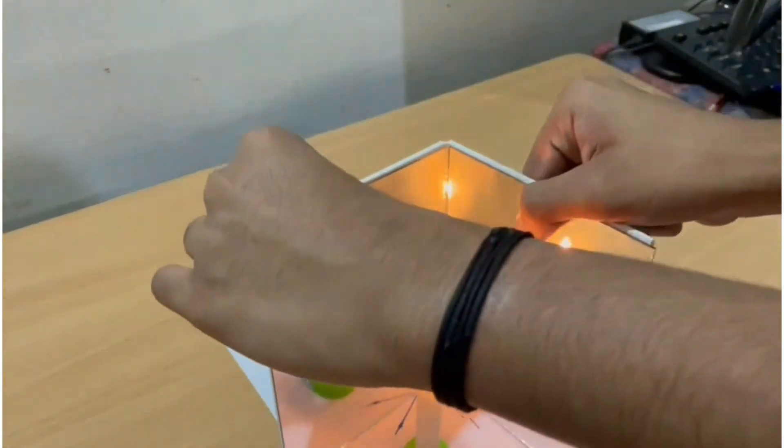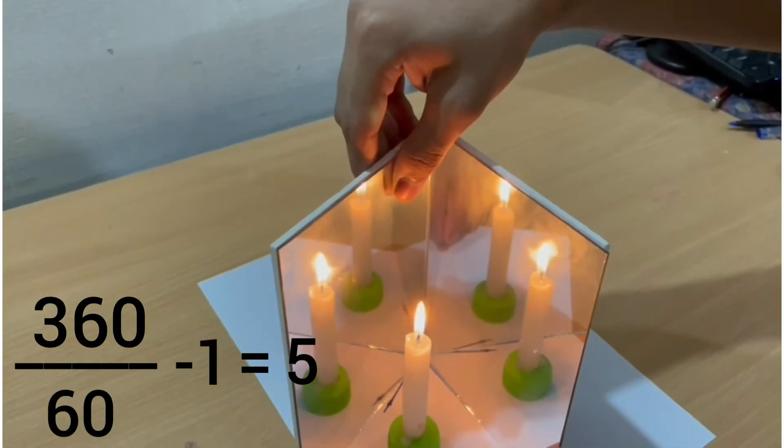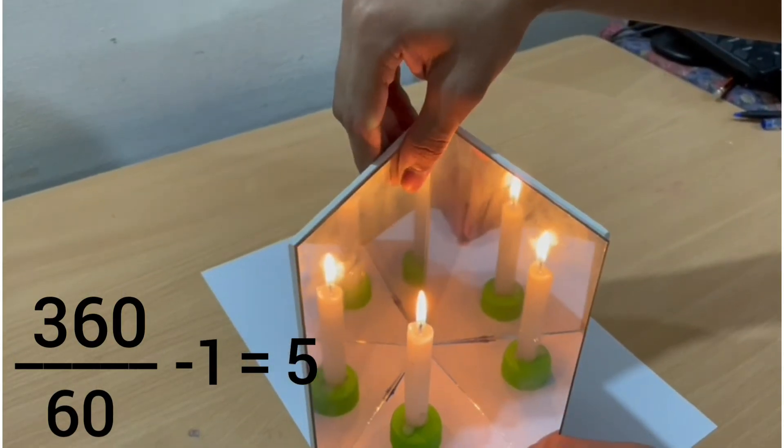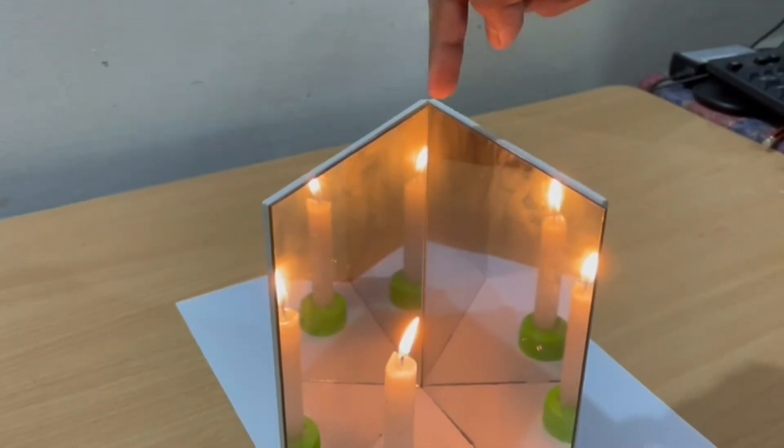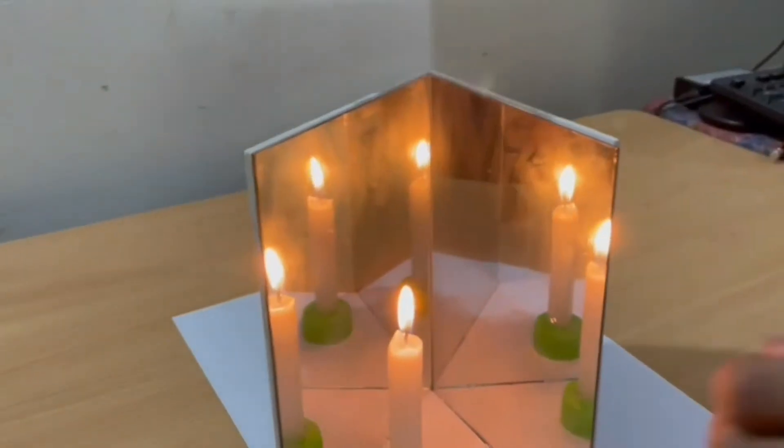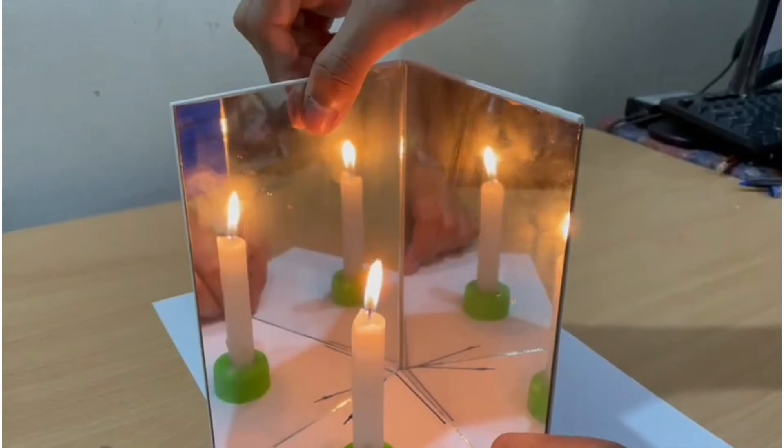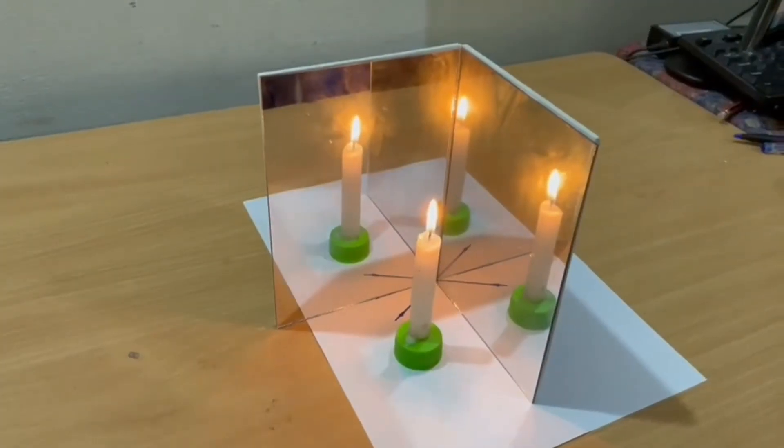If the mirrors are inclined at an angle of 60 degrees, the number of images formed is 5. If two plane mirrors are arranged at a right angle to each other, the number of images formed is 3.